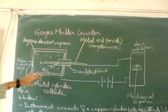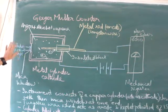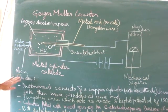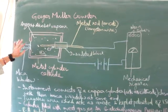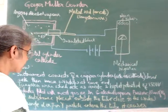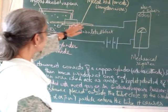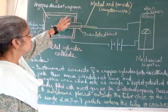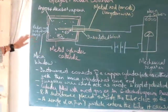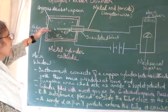It consists of a metal copper cylinder acting as a cathode with one end closed by a mica window. It's filled with inert gas argon plus alcohol vapor at about 10 millimeters of mercury pressure. A tungsten wire acts as an anode, insulated from the cathode by an insulating block. The radioactive rays enter from the sample through the mica window.